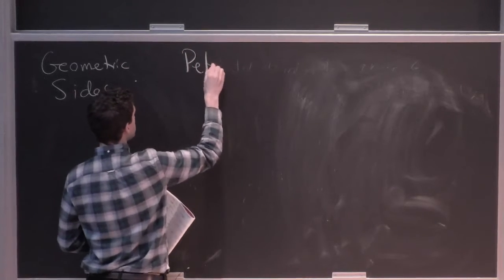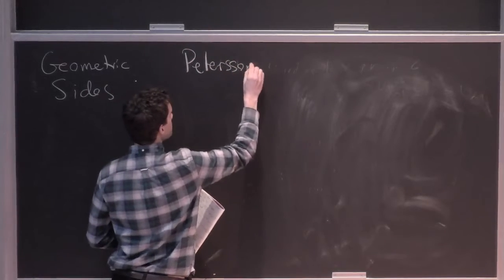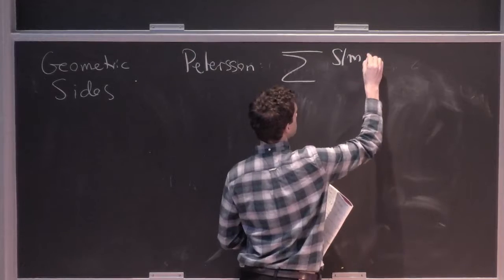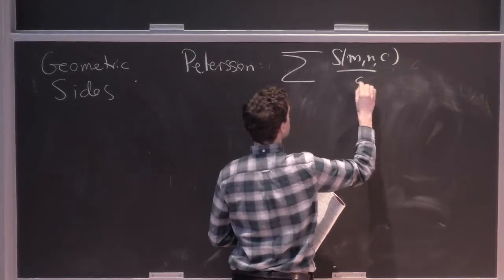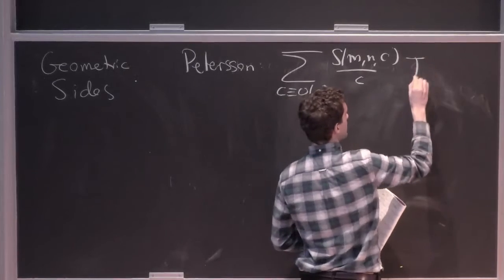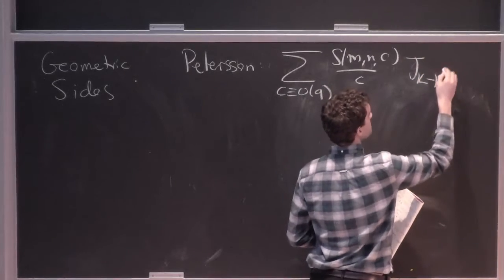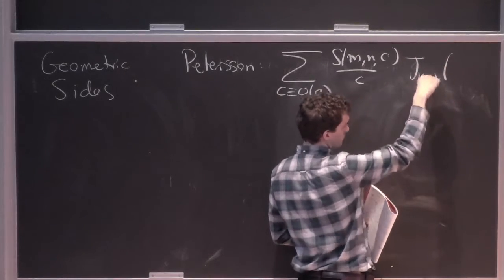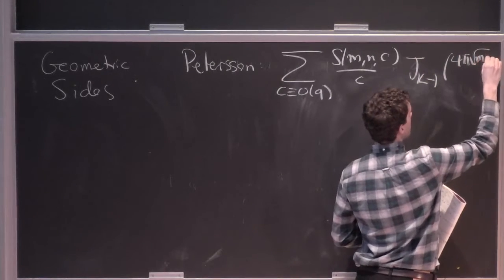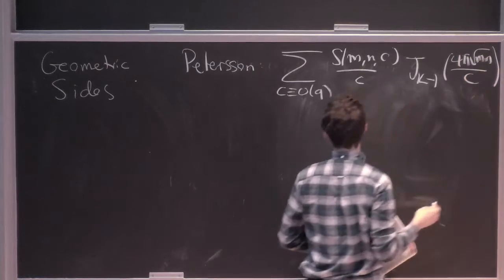So in the Peterson formula, we had a sum over Kloosterman sums against a J Bessel function with a real integral parameter here of 4π√(MN) over C.